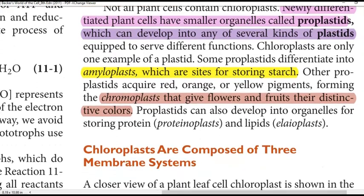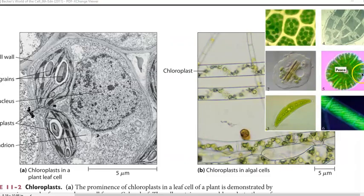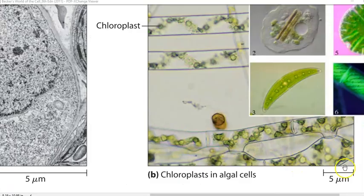Those are called chromoplasts, involved in pigmentation for flowers as well as fruits - they give a distinct color. There are other kinds of proplastids such as proteinoplasts involved in storing protein and lipoplasts involved in storing lipids. In this image you can see the appearance of chloroplasts in different kinds of organisms - some having a very large chloroplast, some having a ribbon-shaped chloroplast as present in Spirogyra.